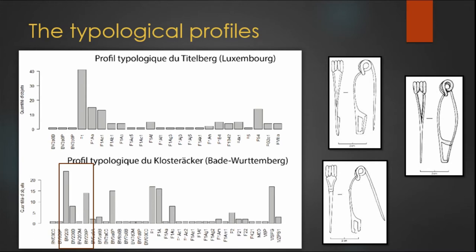Moreover, the quantity of objects of the same type in the same place is also taken into account, and not just the presence or absence as in traditional distribution maps. This means that the representativeness of the type within the material group studied is taken into consideration.